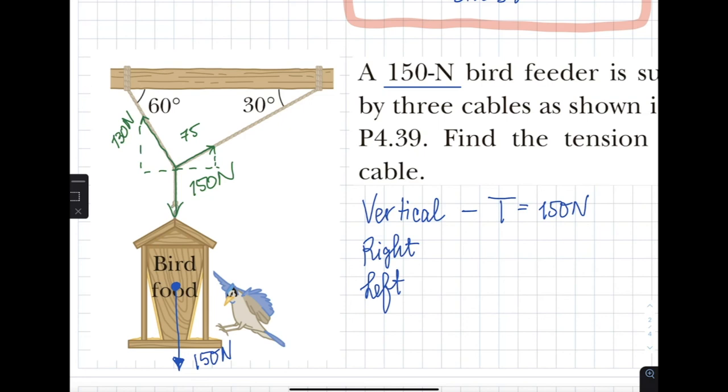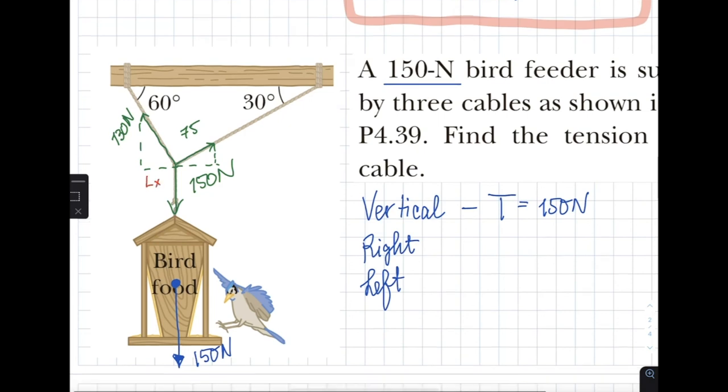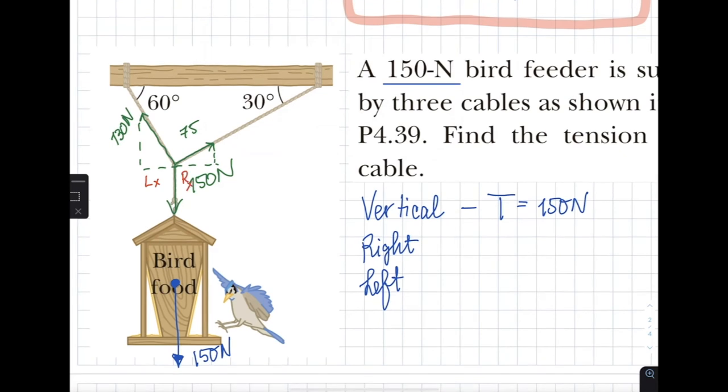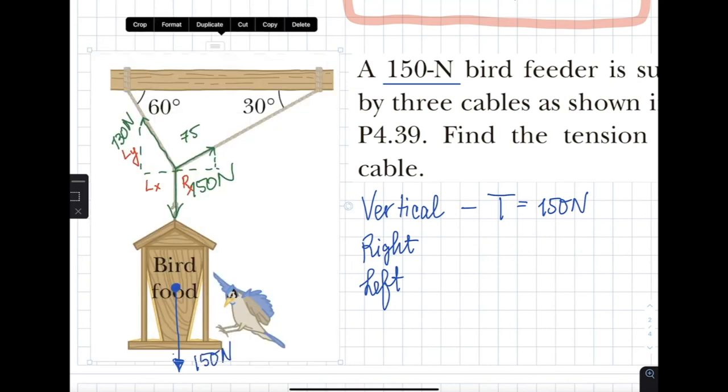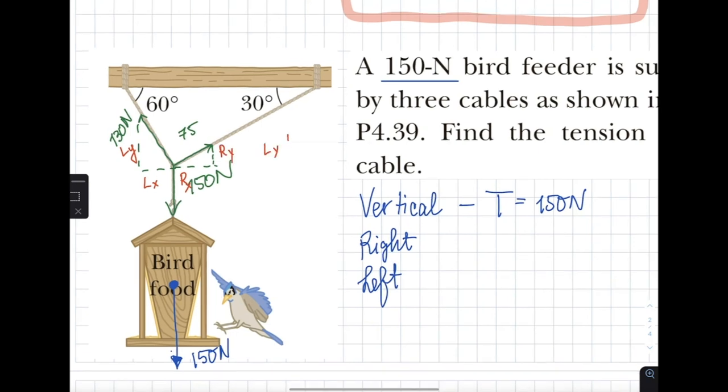When you draw them, this left X and right X balance each other out. Left Y and right Y, the two vertical components, L Y plus R Y together add up to 150 newtons, and L X equals R X and they're opposite each other.